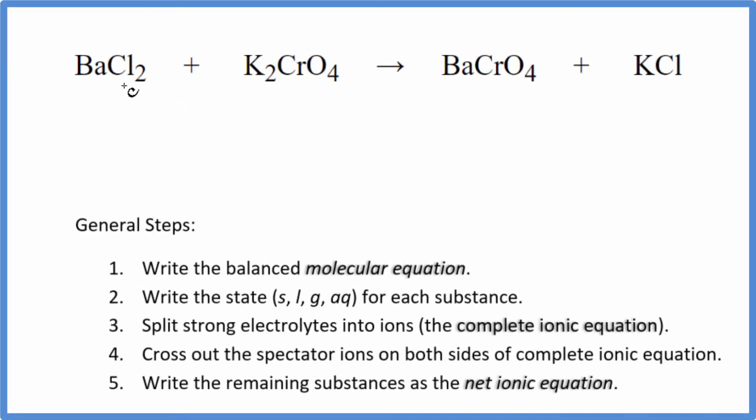In this video, we'll write the balanced net ionic equation for BaCl₂ plus K₂CrO₄. This is barium chloride and potassium chromate. This is the chromate ion, potassium chromate.